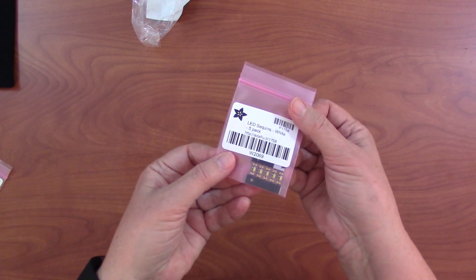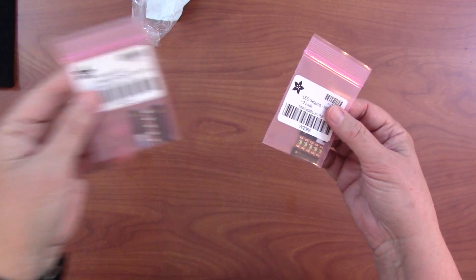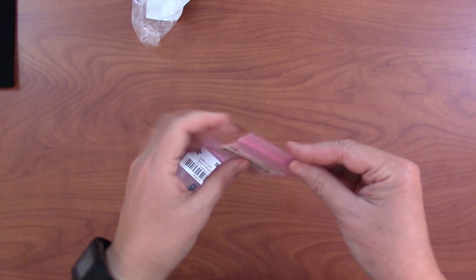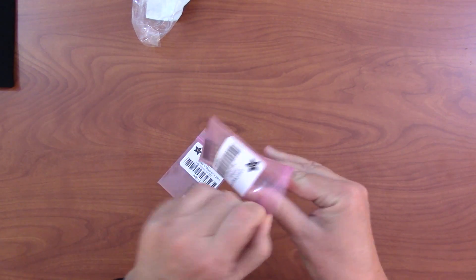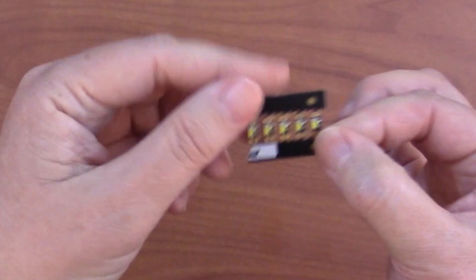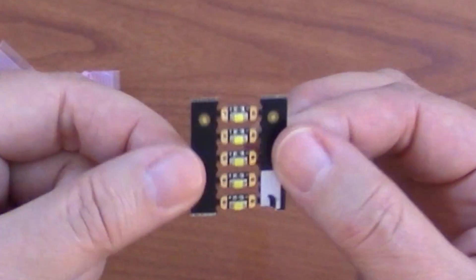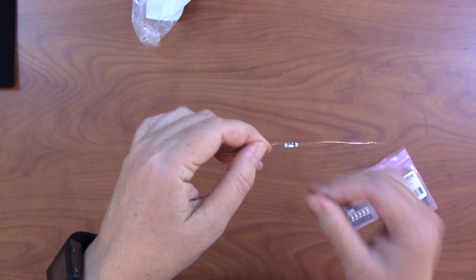The LED lights we use, these are called LED sequins. This pack is white. I actually used a rose color in the necklace itself. We get these from Adafruit. That's where we buy a lot of our electronic components. And you can see the sequins come five to a pack on this little board here, and you just snap them off to use them.